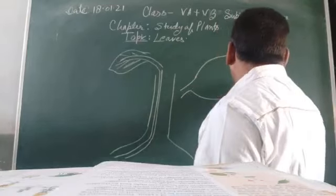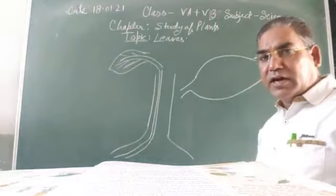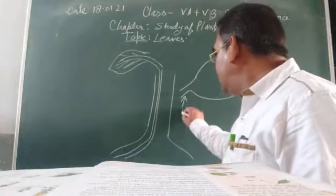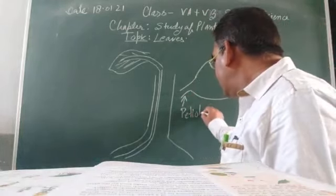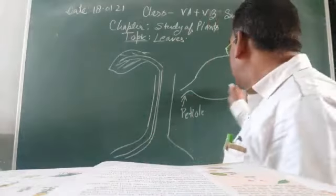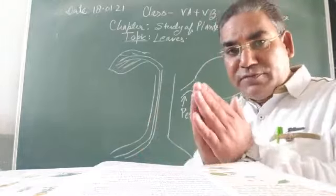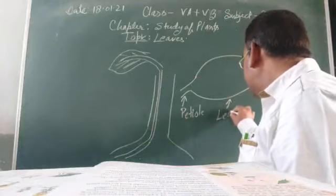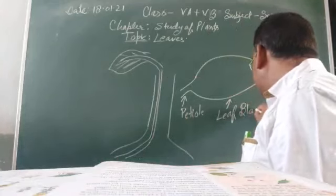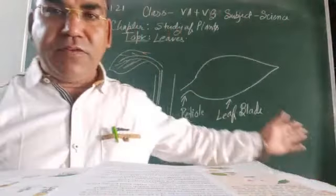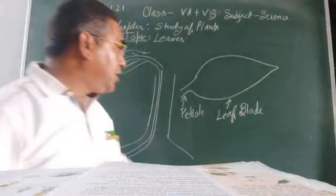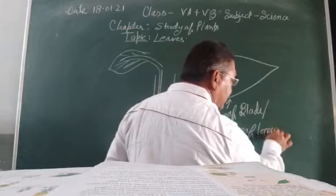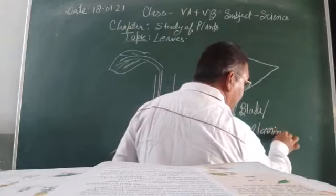Suppose this is the leaf. In this leaf, you are looking here - this is the petiole. This is the part of the leaf known as petiole. And this is the broad part of the leaf, called the leaf blade or leaf lamina.